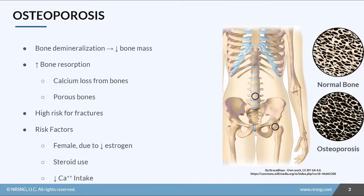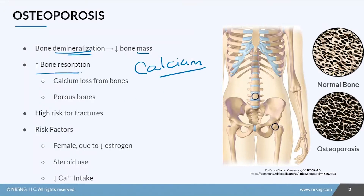Osteoporosis is a disease of bone demineralization. As the bone loses its minerals, it decreases in mass or density. The number one mineral found in bones is calcium. We see an increased rate of bone resorption — calcium is pulled out of the bones into the bloodstream when there's not enough calcium in the blood. The problem is that this resorption is happening faster than the bones can repair themselves or rebuild, so we end up with an overall loss of calcium and the bones become very porous.